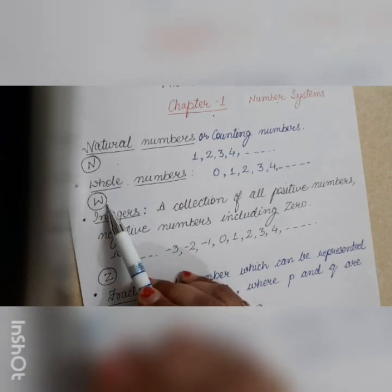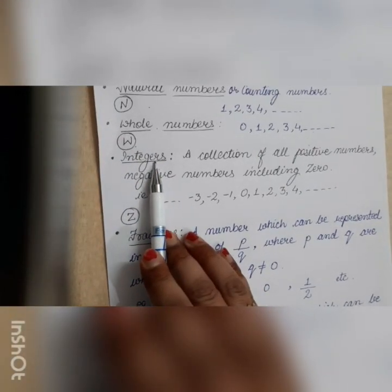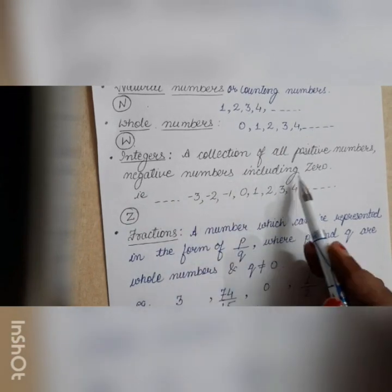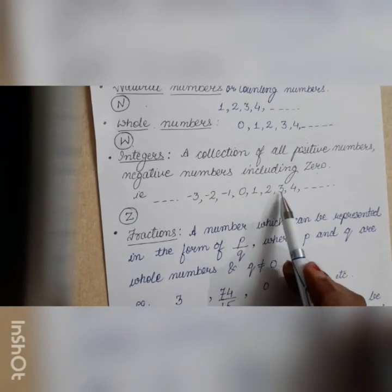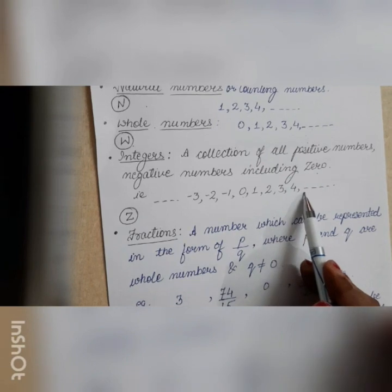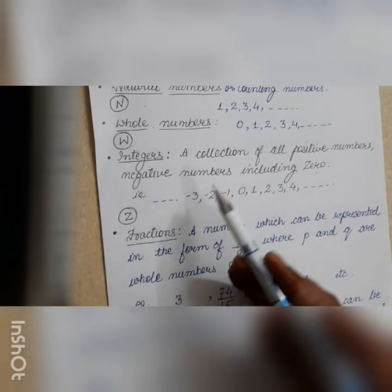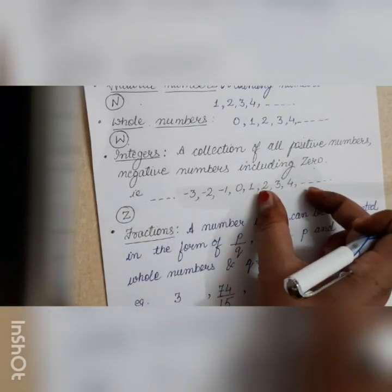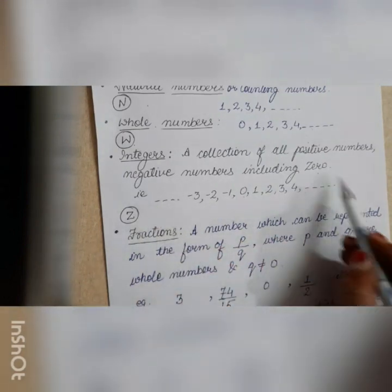The next type of numbers is integers. Integers are the collection of all positive numbers, negative numbers, including zero — like zero, one, two, three, four for positive, and minus one, minus two, minus three, minus four, and so on for negative. So negative numbers, positive numbers, including zero — the whole collection gives you integers, represented by the letter Z.